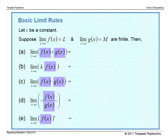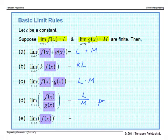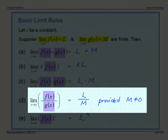As a start, let's look at the basic limit rules. Suppose the limits of f(x) and g(x) as x tends to c are finite, denoted by l and m respectively. Then the limit of f(x) plus g(x) equals l plus m. Similarly, for other operations we get k times l, l times m, l divided by m provided m is not zero, and l to the power n. This result holds when l and m are finite and m is not equal to zero. But when these conditions are not met, we cannot use the division rule.